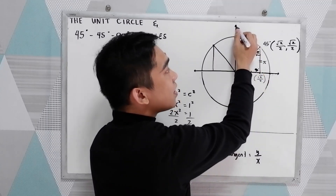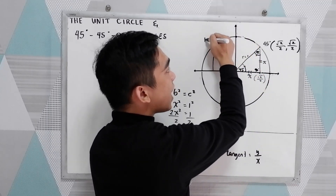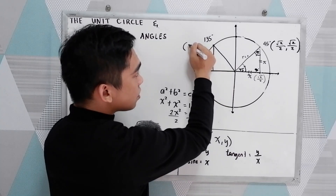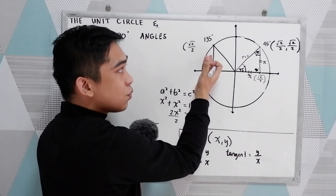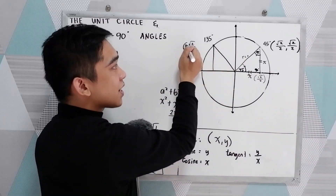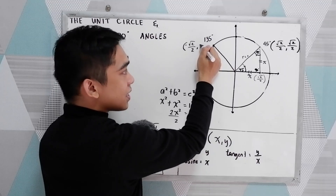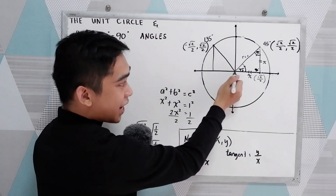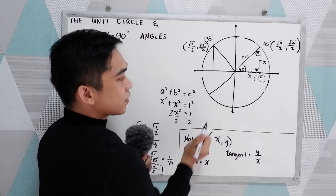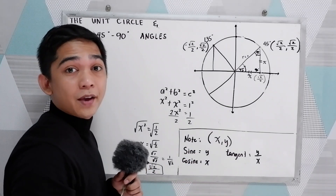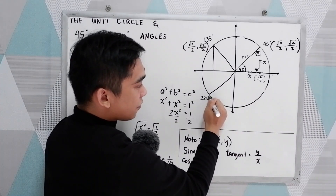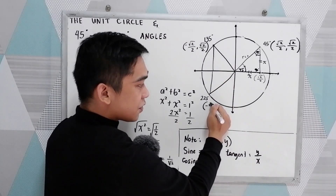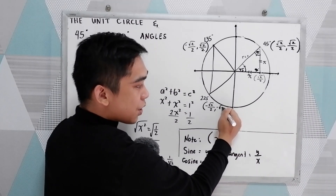At 135 degrees, the value is square root of 2 over 2. Notice that this is located in quadrant 2, so the x sign is negative, giving us negative square root of 2 over 2, and positive square root of 2 over 2 for y. Then 180 plus 45 is 225 degrees, located in quadrant 3, so both are negative: negative square root of 2 over 2 and negative square root of 2 over 2.